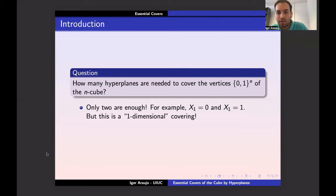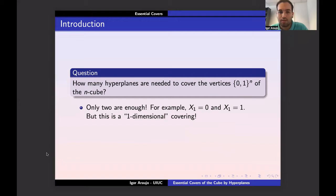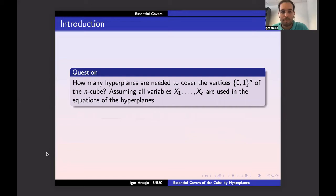To address this, we change the requirements on the hyperplanes — and there are a lot of different directions one can take. One famous example: Alon and Füredi in '93 considered covering all but one vertex of the cube, which led to the combinatorial Nullstellensatz. But we want to cover all vertices while requiring that all variables x₁ through xₙ appear in the equations of the hyperplanes.